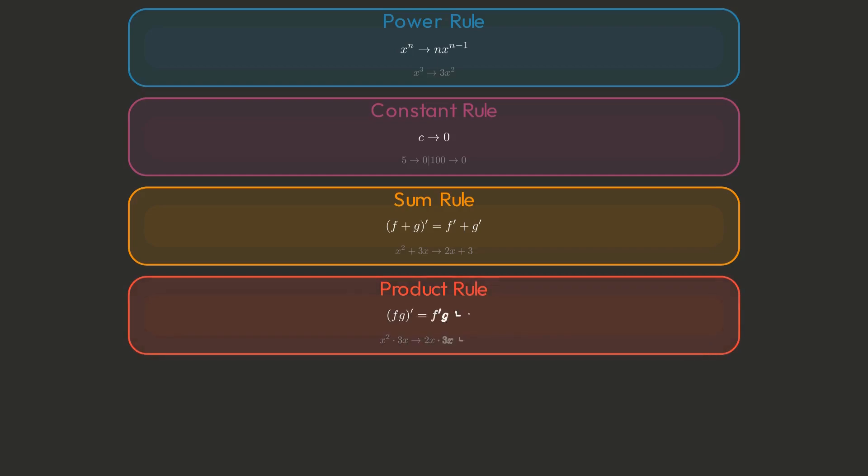When differentiating two functions multiplied together, use the product rule: the derivative of the first times the second plus the first times the derivative of the second. For x squared times 3x, that's 2x times 3x plus x squared times 3, which simplifies to 6x squared plus 3x squared, giving us 9x squared.